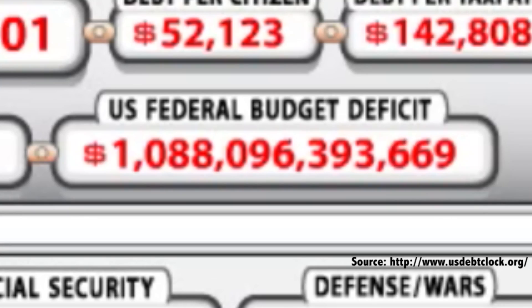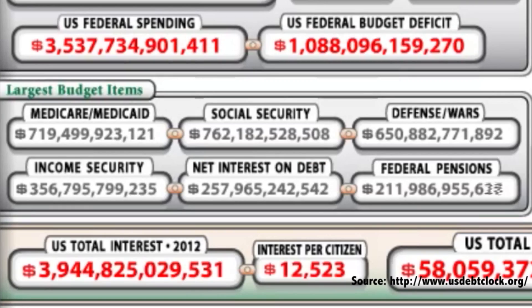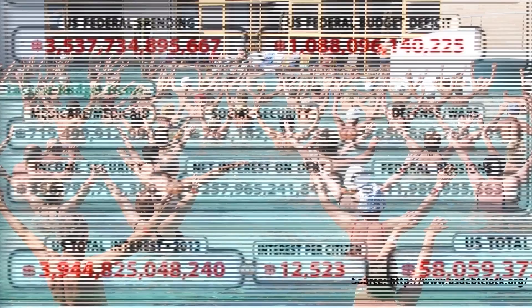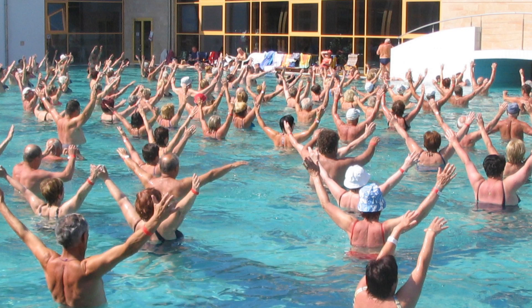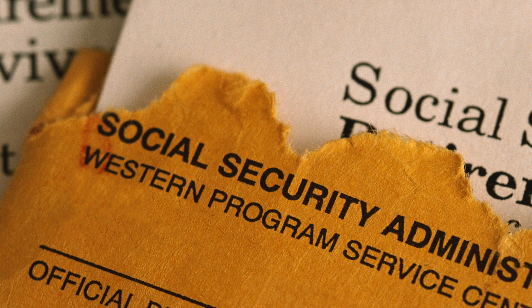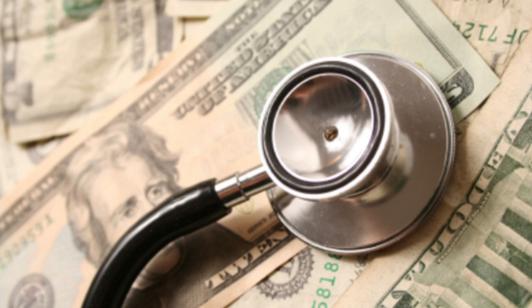Now, our deficits are built in and growing. Spending for the biggest domestic programs increase automatically. People live longer, claim not only retirement and health benefits for more years, but ever higher levels of benefits from generation to generation. Health costs are rising even faster than incomes.